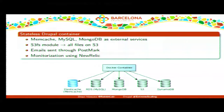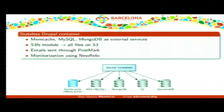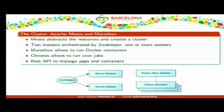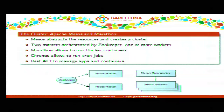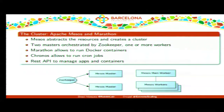Moving one step down to the cluster level — we used an Apache Mesos cluster with two masters and a group of workers. On the workers, we launch Docker containers using Marathon. The entire cluster is orchestrated by ZooKeeper. We also had a proxy, and used Chronos — another Apache Mesos-based tool — to execute cron jobs. We had some issues running cron jobs inside Docker containers, so Chronos handled those well.